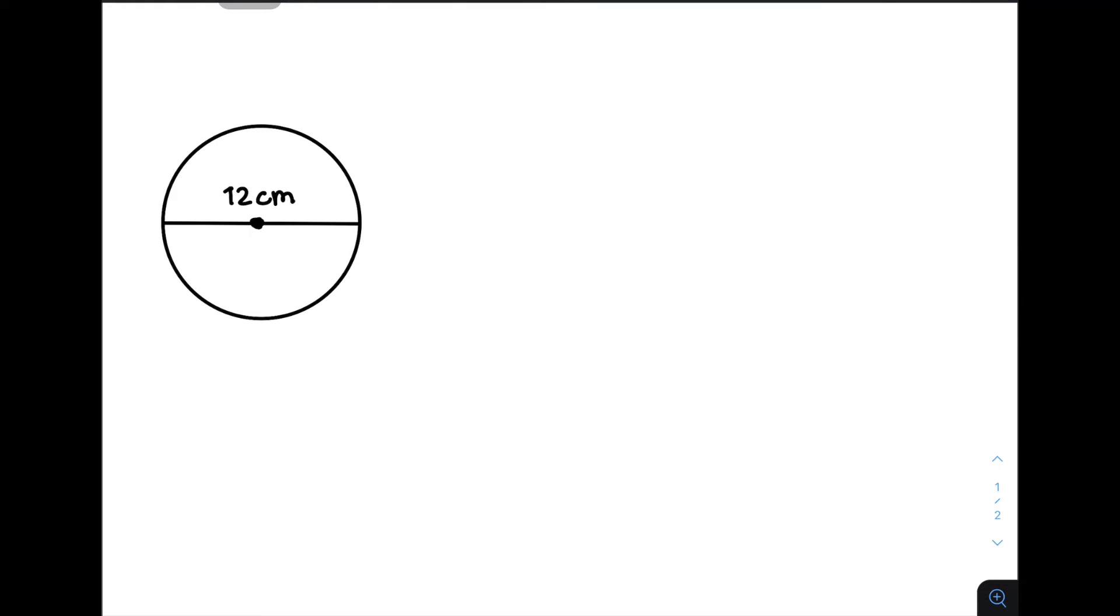In our formula, we are using area is equal to pi r squared. So, how are we going to solve for the area of this given circle if we have the diameter?